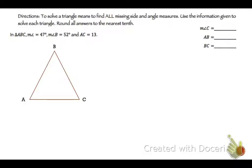So we're going to draw the triangle. That's supposed to say measure of angle A. So angle A is 47. So let's label A 47. Angle B is 52. So that's 52. Then AC is 13.